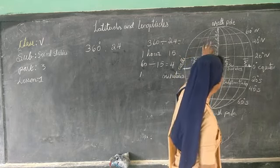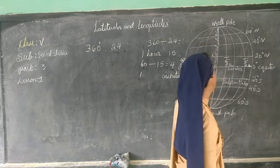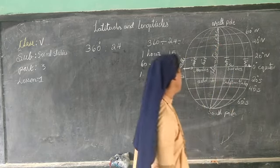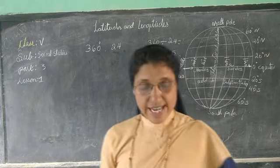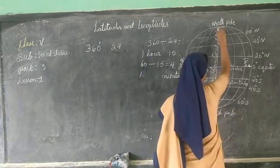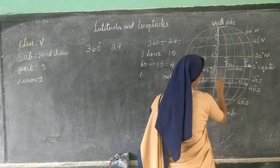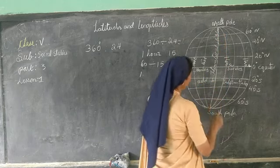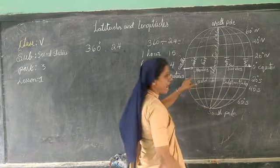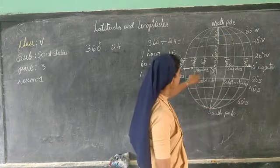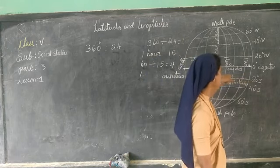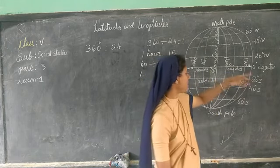It takes 4 minutes to move from one longitude to the next. Then, coming to the International Date Line, which is shown here — when you go to the east side, you add an hour or a day, and when you go to the west side, you reduce or subtract a day.